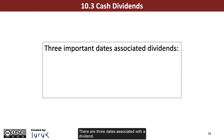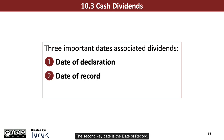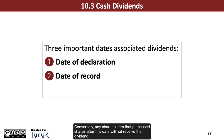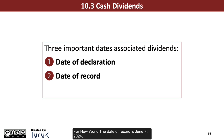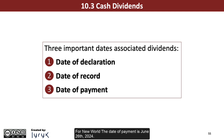There are three dates associated with a dividend. First is the date of declaration — for New World, the date of declaration is May 25, 2024. The second key date is the date of record. This is the date when the shareholders that will receive the dividends are identified. Any shareholders selling their shares after this date will still receive the dividend. Conversely, any shareholders that purchased shares after this date will not receive the dividend. For New World, the date of record is June 7, 2024. The third key date is the date of payment — this is the date the dividends are paid to the shareholders. For New World, the date of payment is June 26, 2024.